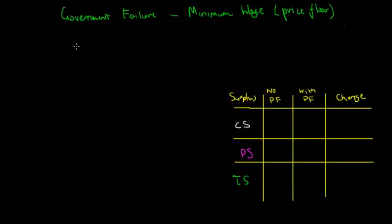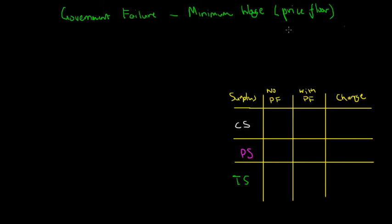This is another lecture on government failure, and this time we're going to look in depth at how price floors can affect the allocative efficiency of the market and how that could reduce material living standards of the economy. The most pertinent example of a price floor applicable to our daily lives is the concept of a minimum wage.